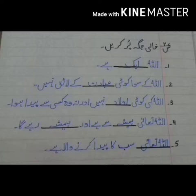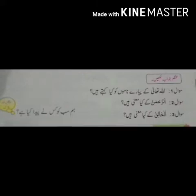اللہ تعالیٰ سب کا پیدا کرنے والا ہے۔ مختصر جواب لکھیں — اسلامیات کے تمام سوال ہم زبانی یاد کریں گے اور ہر سبق میں سے ایک یا دو سوالوں کی اسلامیات کاپی میں مشق کریں گے۔ سوال نمبر ایک: اللہ تعالیٰ کے پیارے ناموں کو کیا کہتے ہیں؟ جواب: اللہ تعالیٰ کے پیارے ناموں کو اسماء الحسنہ کہتے ہیں۔ سوال نمبر دو: الرحمٰن کے کیا معنے ہیں؟ جواب: الرحمٰن کے معنے ہیں بہت ہی مہربان۔